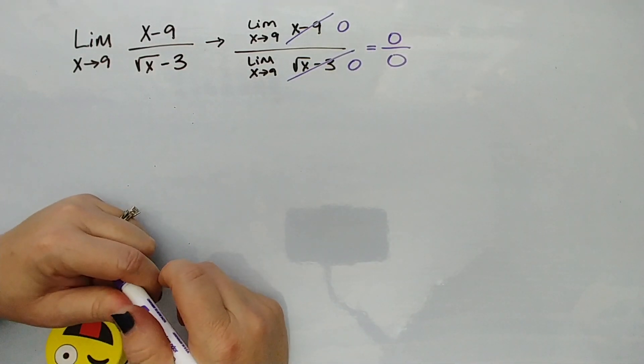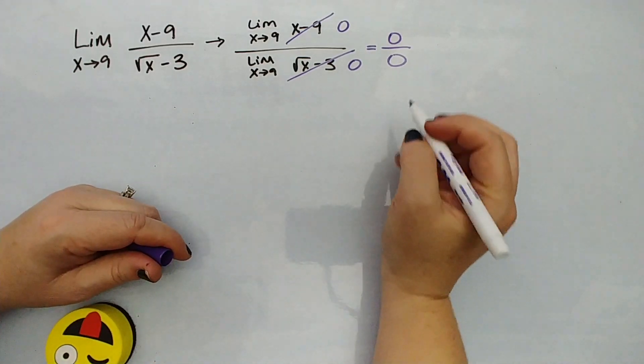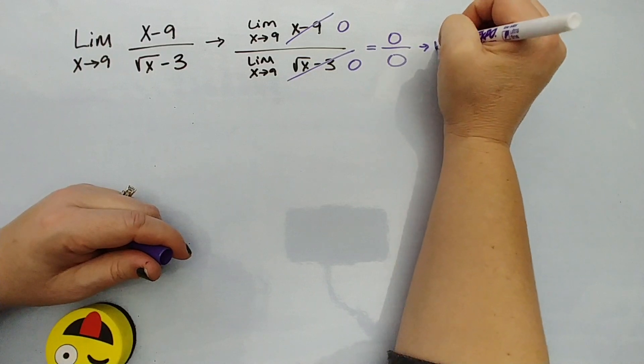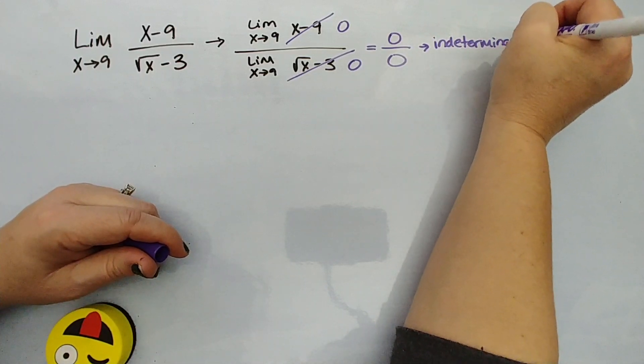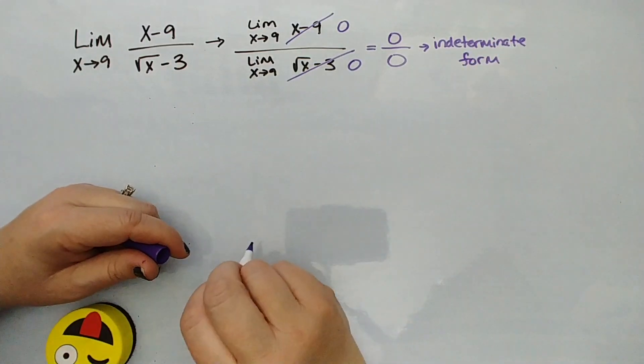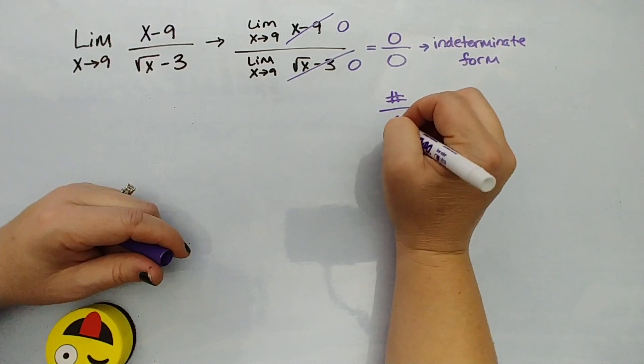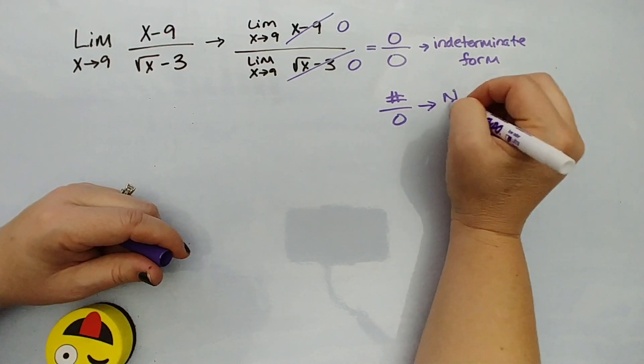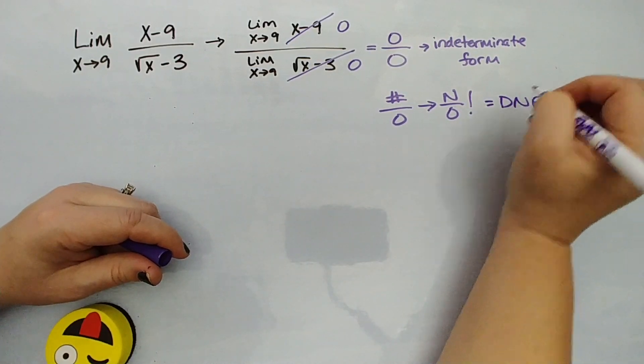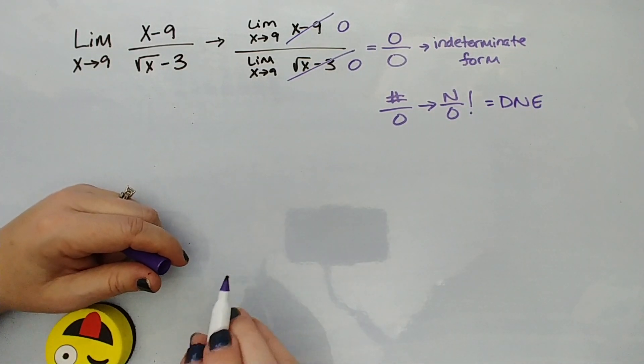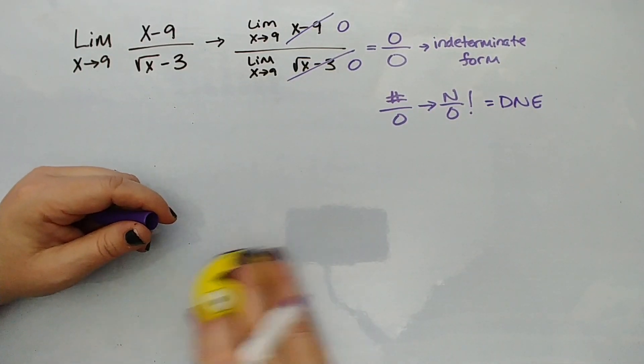You may be tempted to say it does not exist and move on to the next problem. However, remember that this is the indeterminate form, which means we really can't determine anything from it yet. If you got a number over 0, that has no value and would be a limit that does not exist. But we did not get that. We got the indeterminate form, 0 over 0, which is going to happen often.